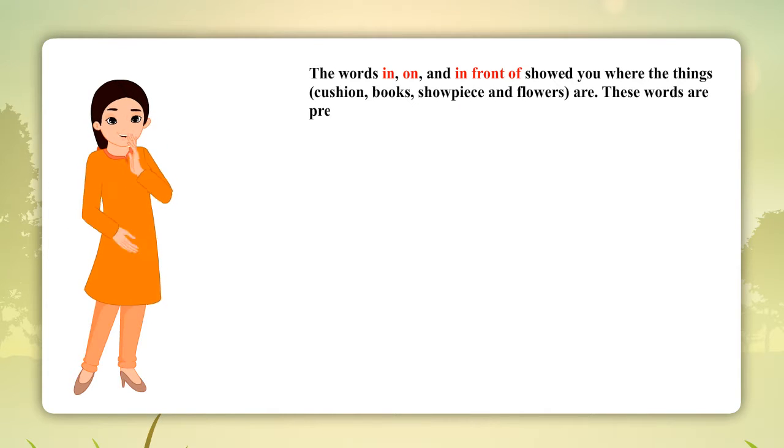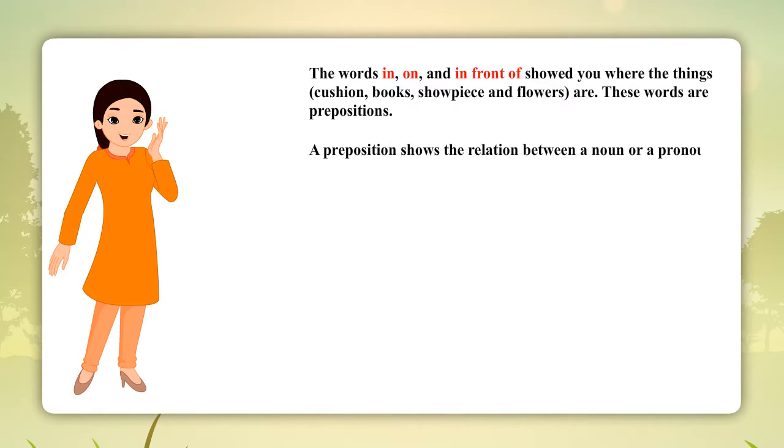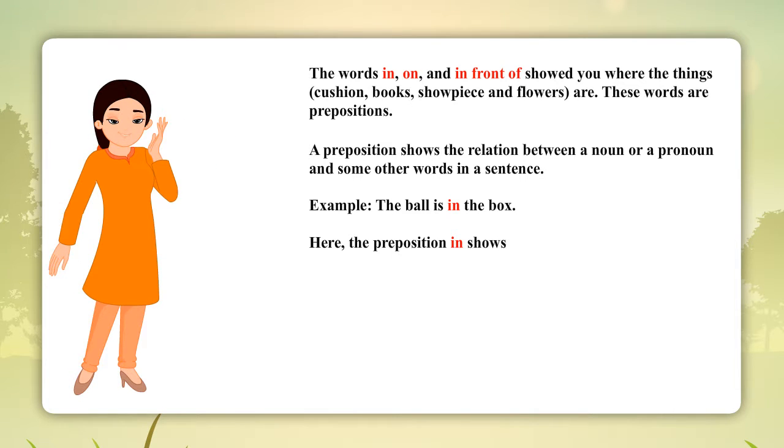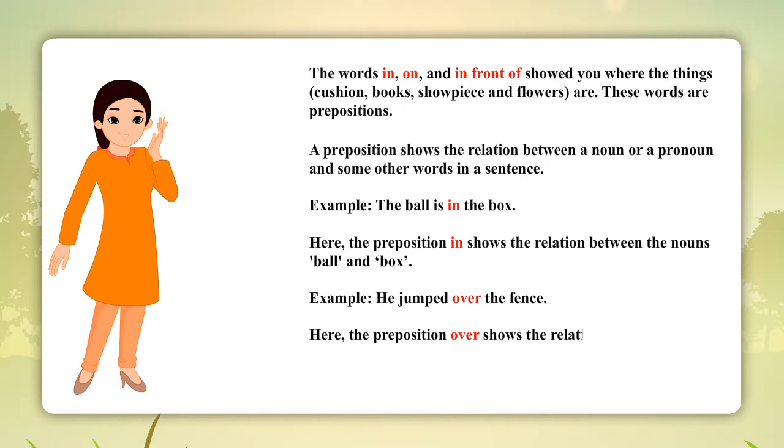A preposition shows the relation between a noun or a pronoun and some other words in a sentence. Example: The ball is in the box. Here, the preposition in shows the relation between the nouns ball and box. Here, the preposition over shows the relation between the noun he and the noun fence.